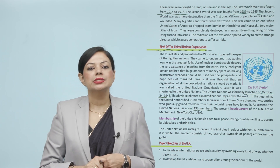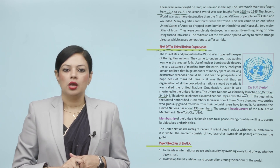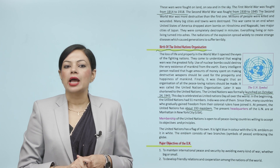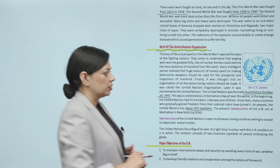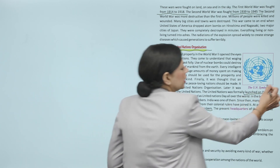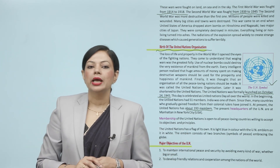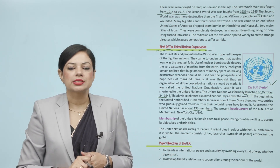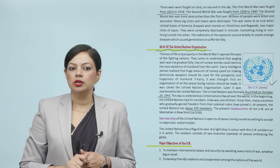The United Nations has a flag of its own. It is light blue in color with the UN emblem on it in white. The emblem consists of two branches, a symbol of peace embracing the globe.